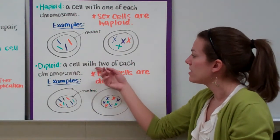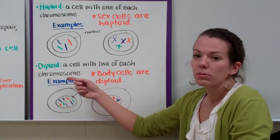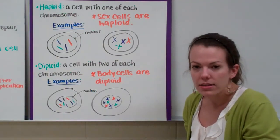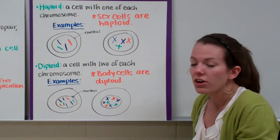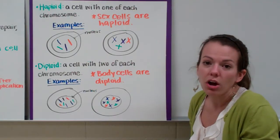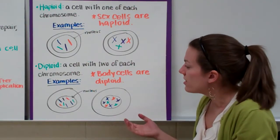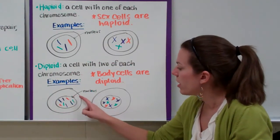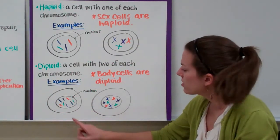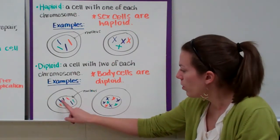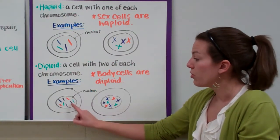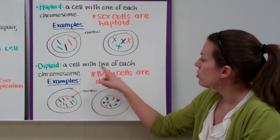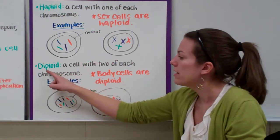Diploid cells are cells with two of each chromosome. Our body cells, also known as somatic cells, are diploid — your hair cells, eye cells, and skin cells are all diploid. Looking at a cell sketch with a nucleus, let's count the chromosomes: we have two purple chromosomes, two orange chromosomes, two green chromosomes, and two blue chromosomes. This has two of each chromosome, therefore it is diploid.